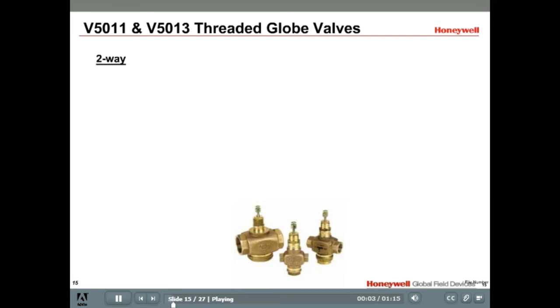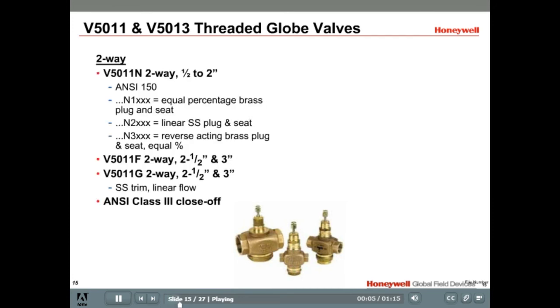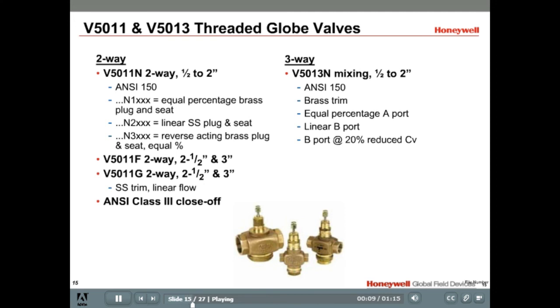The V5011 two-way and V5013 three-way valves are Honeywell's threaded globe valves. These have ANSI class 150 pressure and temperature body ratings. They also have ANSI class 3 close-off ratings. ANSI class 3 allows for up to 0.1% of CV leakage. However, these valves actually are rated to 0.05% leakage, which makes them not too far away from the ANSI class 4 ratings of 0.01% CV.